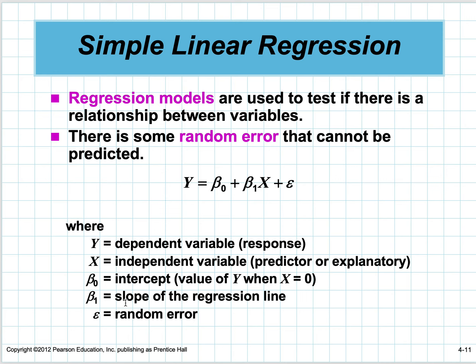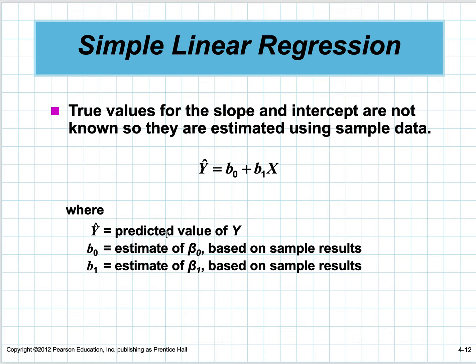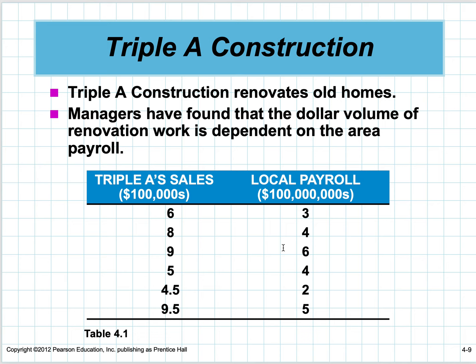We can't find the population parameters, but within statistics we use sample statistics to make estimates of them. We want to estimate on a smaller sample. Here's the data—we don't have all the data of local payroll and sales, but we've collected some.